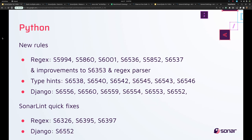In Python, we've got a set of new rules for regular expressions, plus improvements to the underlying regular expression parser and improvements to the existing regular expression rule S6353. We've also got a set of new rules for type hints, a set of new rules for Django, and we've added SonarLint quick fixes to three regex rules and one Django rule.